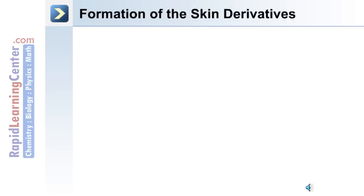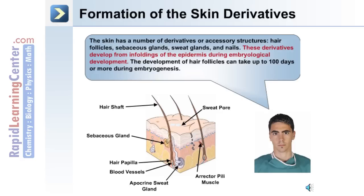The formation of skin derivatives. The skin has a number of derivatives or accessory structures. Shown here in the image is a cross-section of the skin and accessory structures such as the hair, apocrine sweat glands, arrector pili muscle, and sebaceous glands. These derivatives develop from infoldings of the epidermis during embryological development. The development of hair follicles can take up to 100 days or more during embryogenesis.